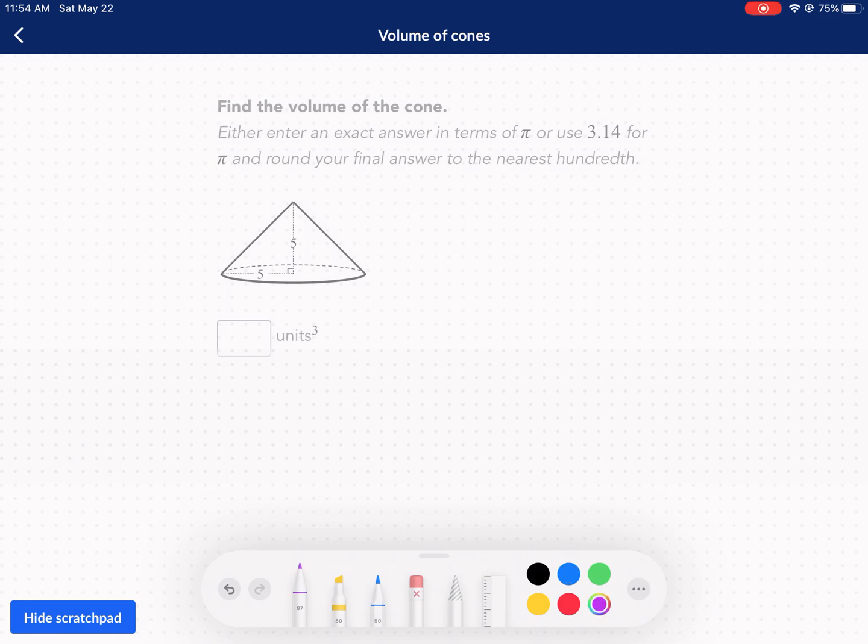So we're going to go ahead and translate. We have 1 third times pi times our radius 5 squared times 5. So we have 1 third times pi times 25 times 5. That's 1 third pi times 125. And we can leave it in terms of pi. So I'm going to leave it as a fraction. 125 is not divisible by 3.